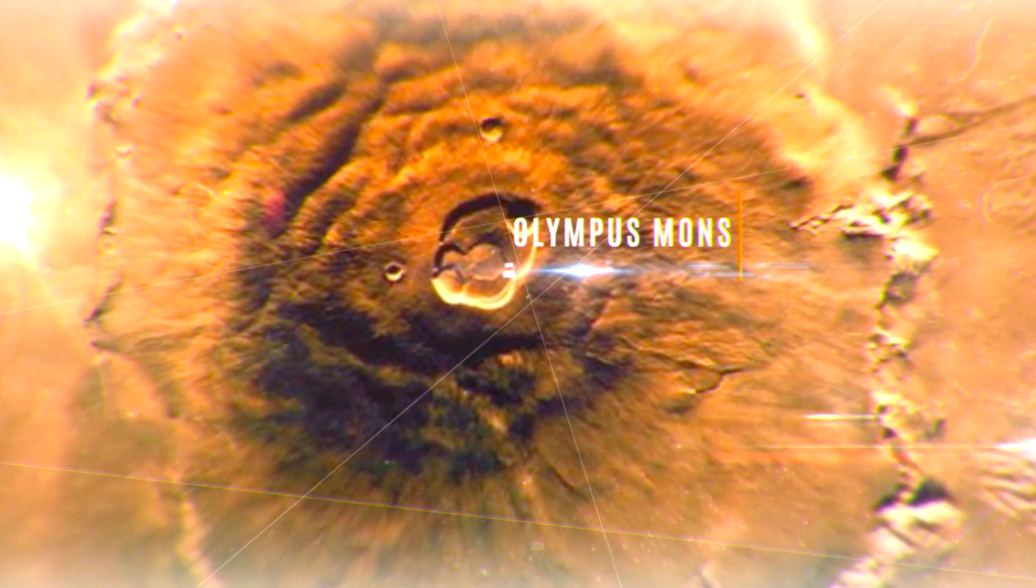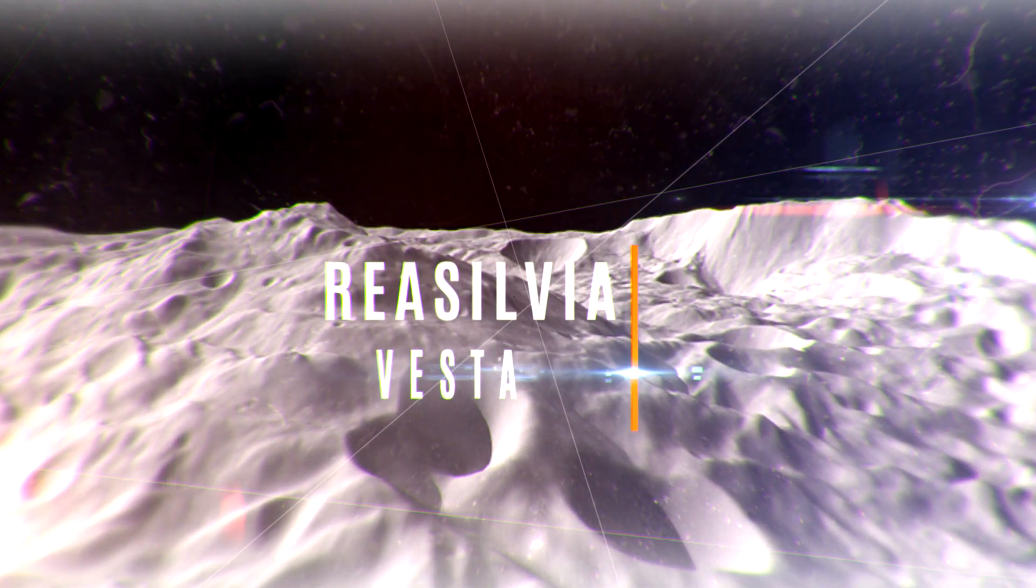There is a volcano on Mars three times the size of Everest. At 600 kilometers wide and 21 kilometers high, Olympus Mons is a volcano on Mars that may still be active, according to scientists. It is the tallest peak of any planet. However, the Rhea Silvia central peak on the asteroid Vesta is taller at 22 kilometers.